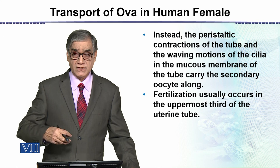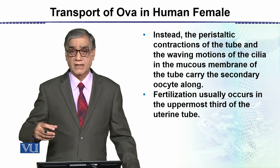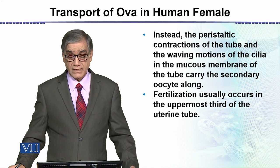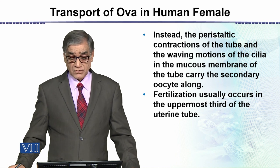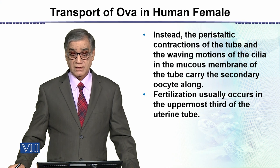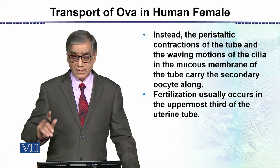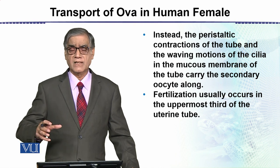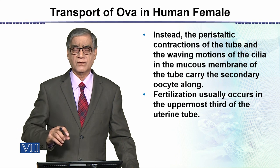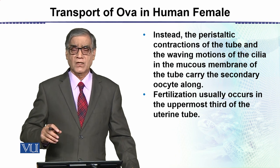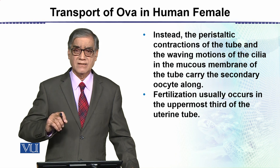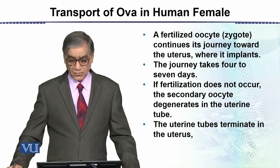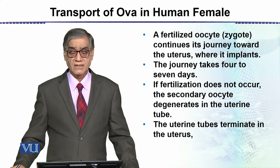There are wave-like motions that push this egg along, and the membrane of the tube carries the secondary oocyte forward. Fertilization usually occurs in the uppermost third part of the uterine tube — very soon after the egg enters the uterine tube just past the fimbria.